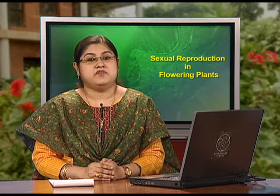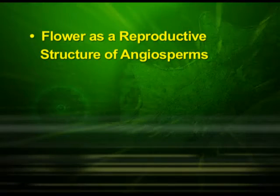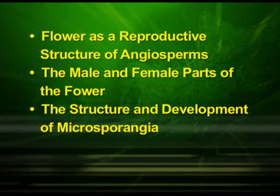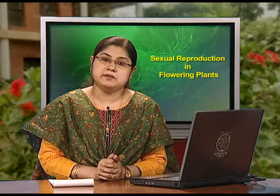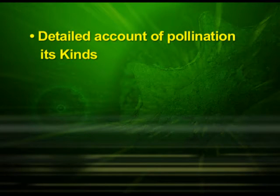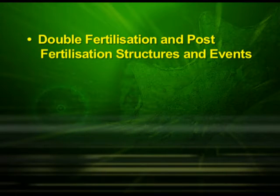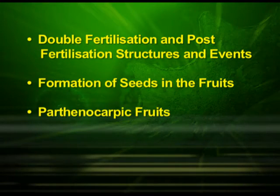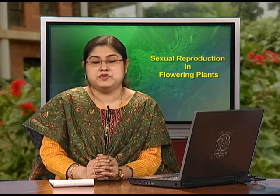We have now come to the end of this chapter on sexual reproduction in plants. The first part covered the flower as a reproductive structure, the male and female parts, the structure and development of microsporangia and pollen grains. The second part covered the megasporangium or ovule and the embryo sac. The third part covered pollination, its kinds, pollen-pistil interaction and artificial hybridization. This final part covered double fertilization, post-fertilization structures and events including endosperm and embryo development, seed and fruit formation, parthenocarpic fruits, and the process of apomixis and polyembryony. Wish you all the best. Thank you.